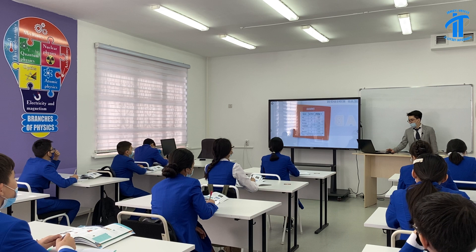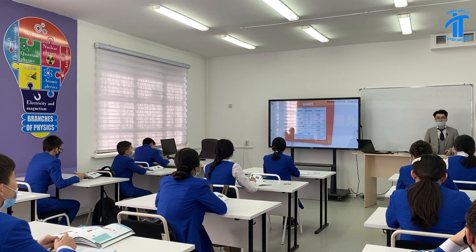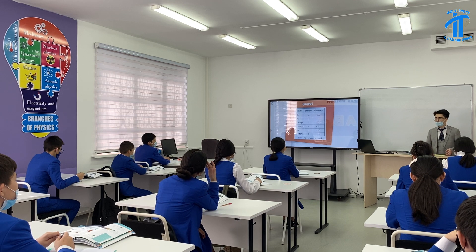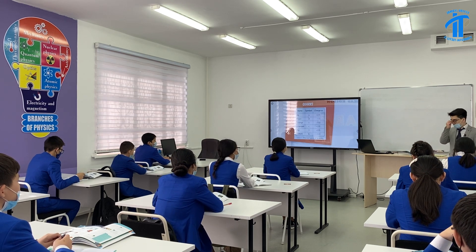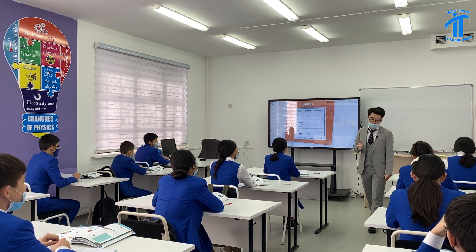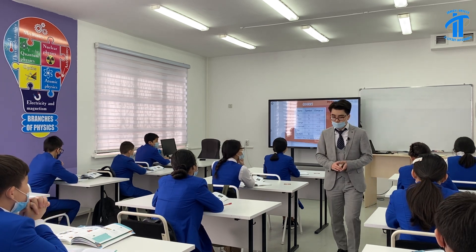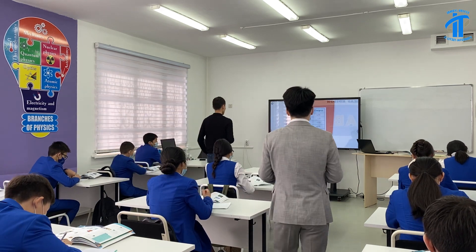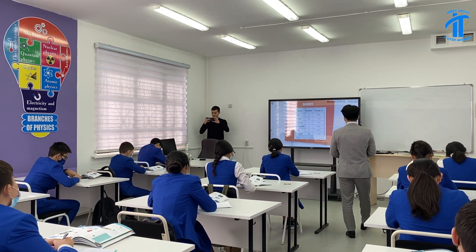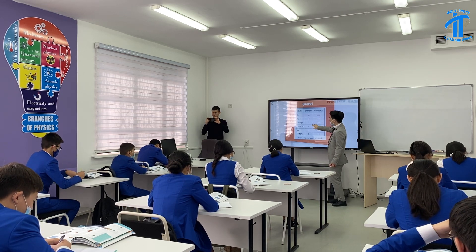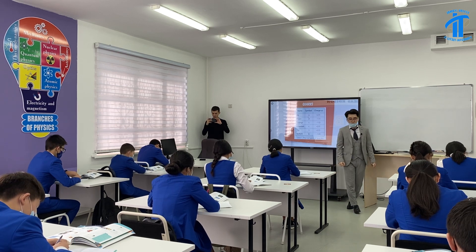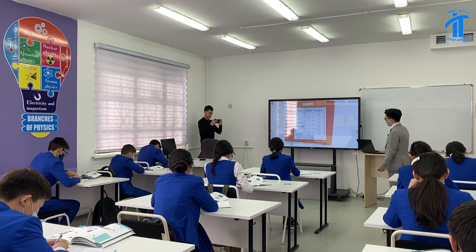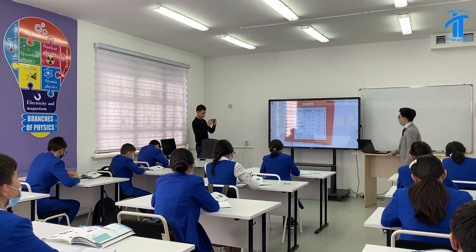Step number one: Quarks. What is a quark? Who can tell me the definition? Quarks are one of the fundamental components. The quark is the smallest known particle today. Please write down in your notebooks: six types of quarks — up-quark, down-quark, strange-quark, charm-quark, top-quark, and bottom-quark. Their symbols are U, D, S, C, T, B. They also have a charge, which we will study later.